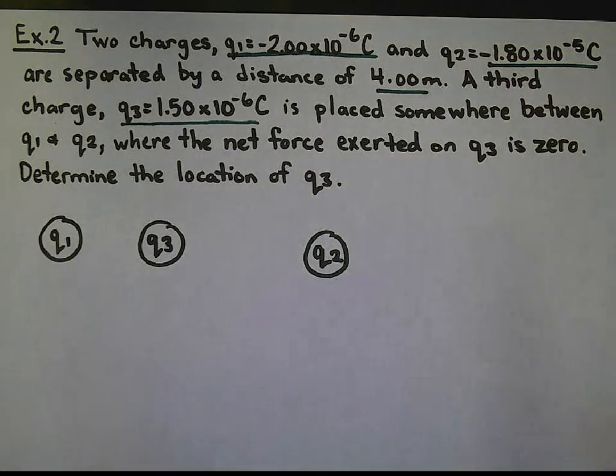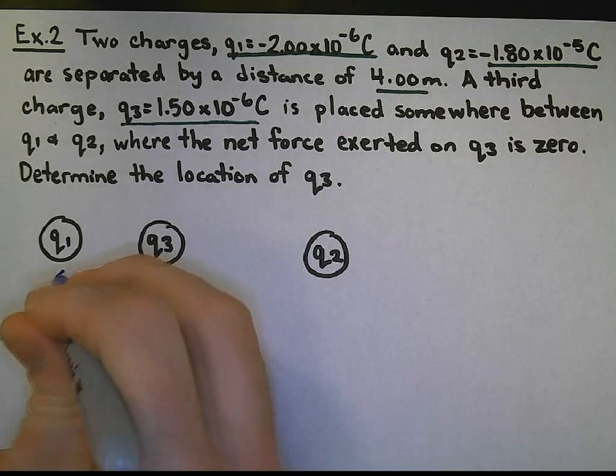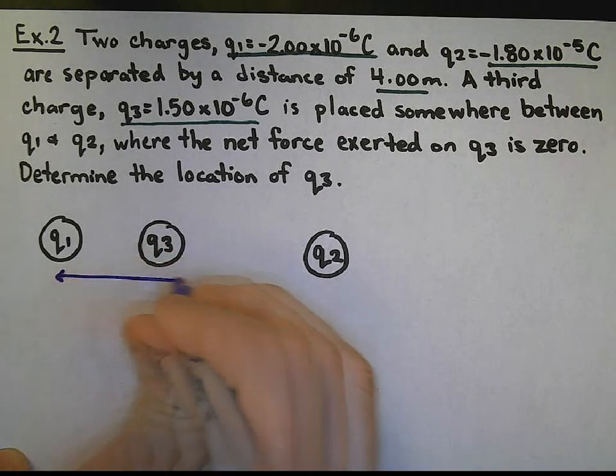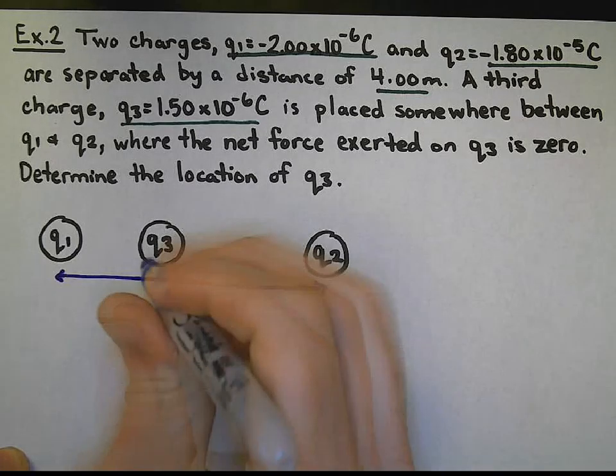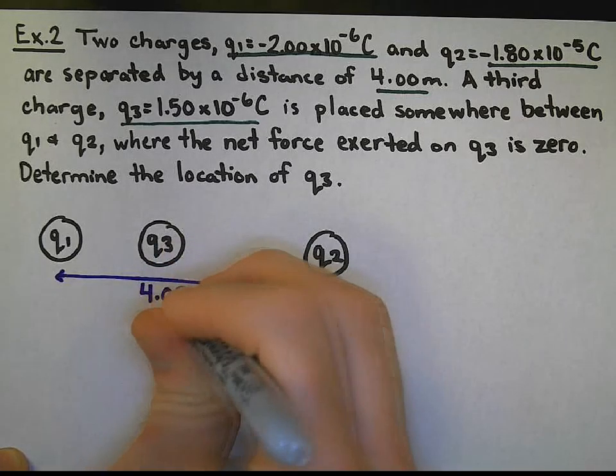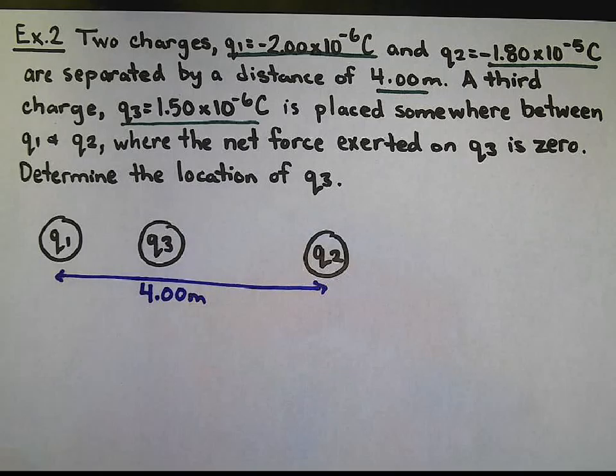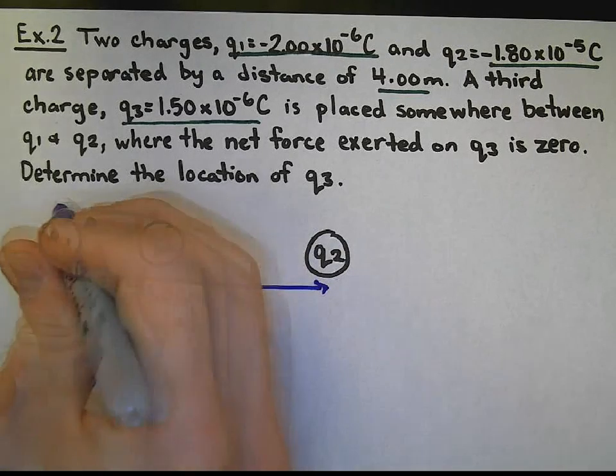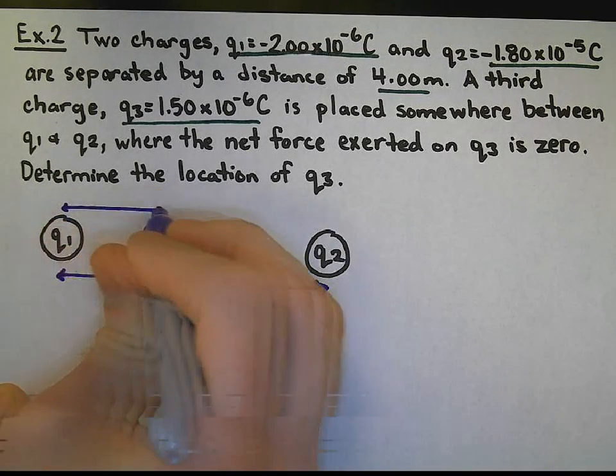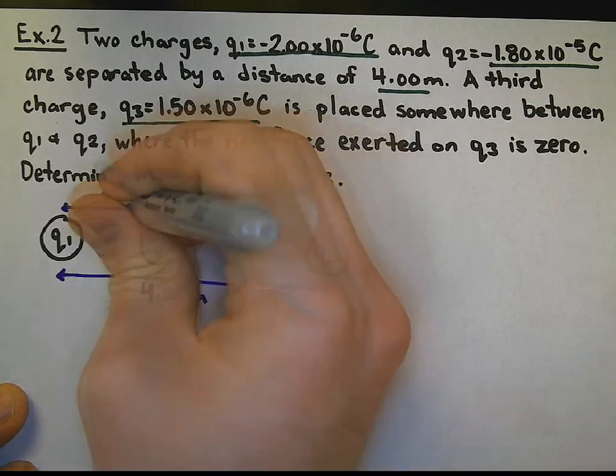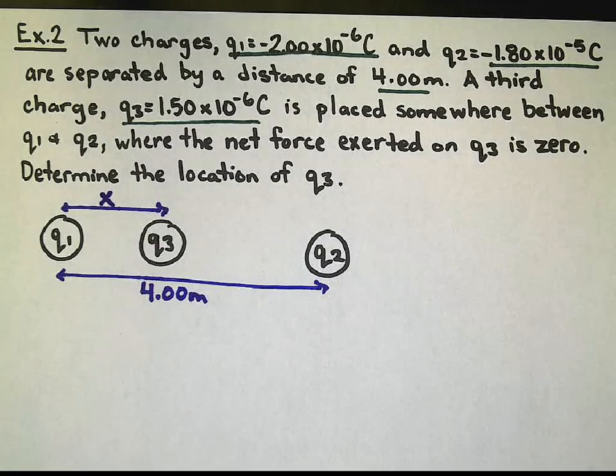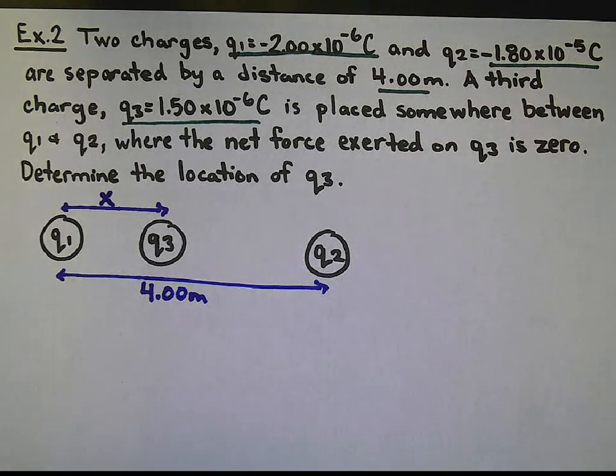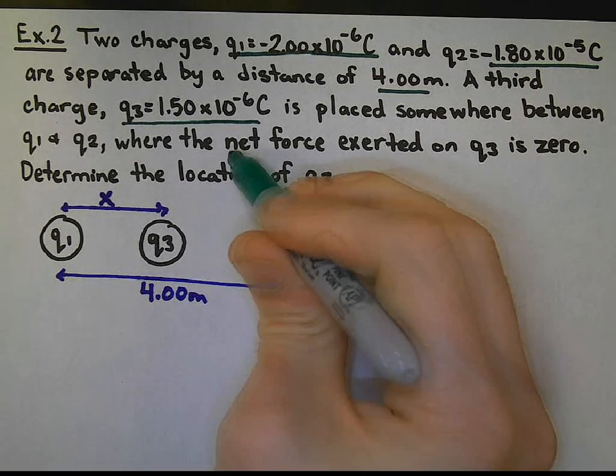All that we know right now is the distance between Q1 and Q2 is 4.00 meters. We know that Q1 and Q3 might be separated by some distance x. Other thing that we should know that I did not underline, net force on Q3 is 0.